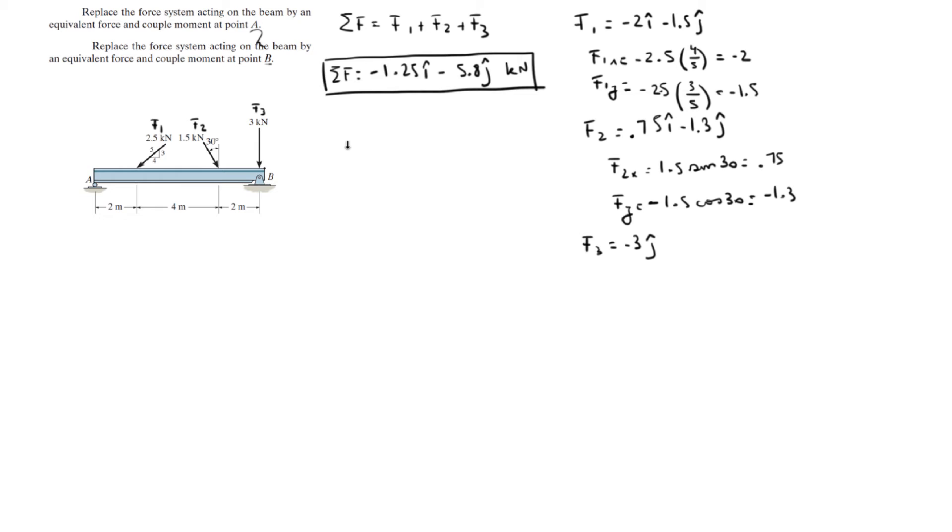We usually want it in magnitude and direction angles so to convert it to polar form it's 1.25 squared plus 5.8 squared and all of that square rooted and you're going to get that the resultant force is 5.93. To find the angle all you got to do is the tangent inverse of 5.8 over 1.25 and you're going to get that the angle is 77.8 degrees. And since it's negative in the X and negative in the Y you know that that angle is pointing that way. So all we did is converted this to polar form and this is the answer for the resultant force.